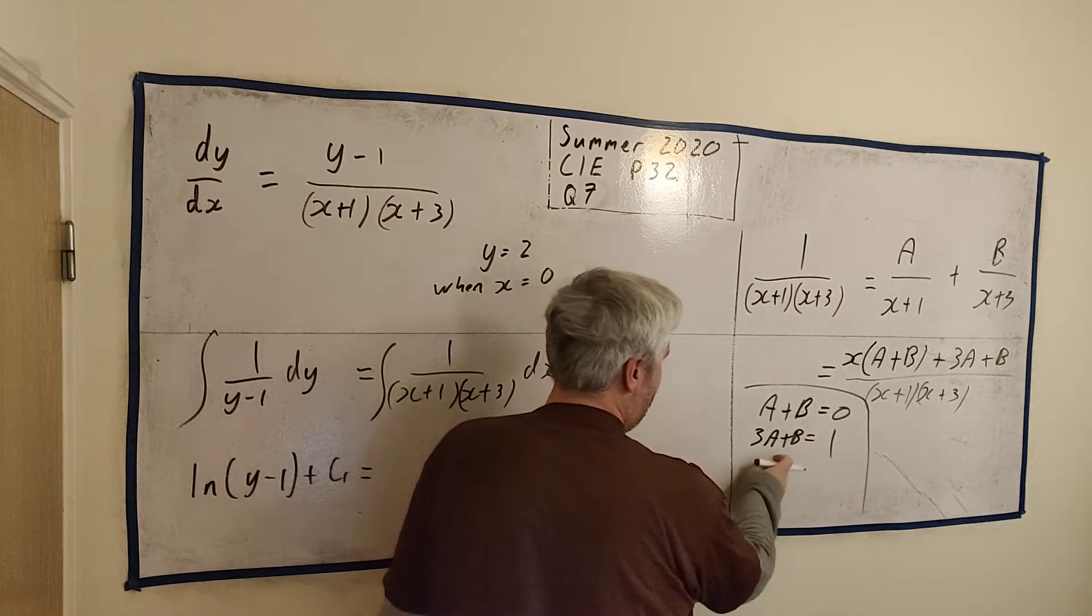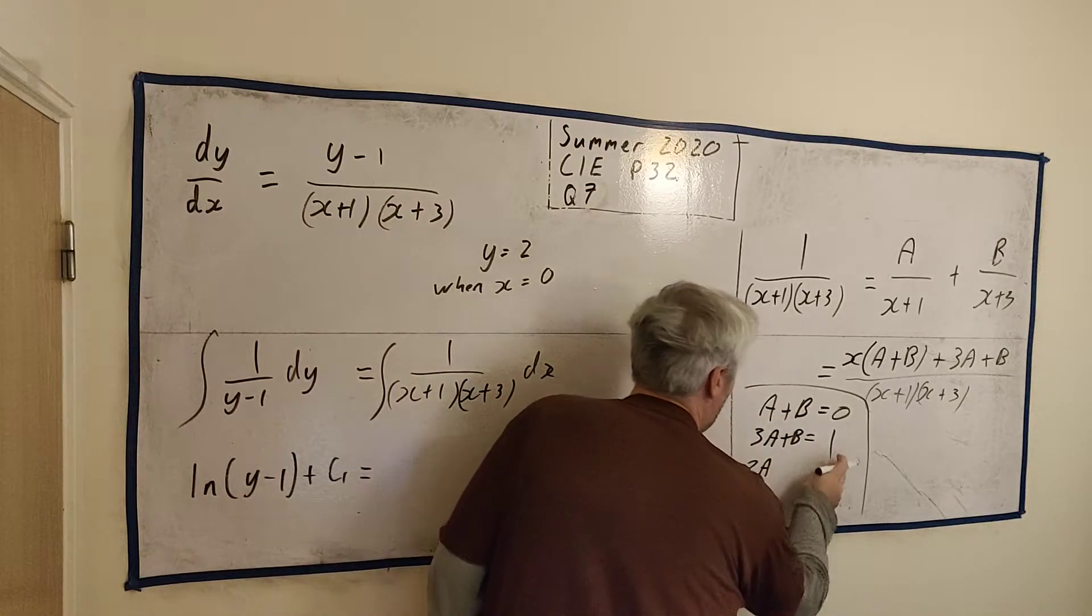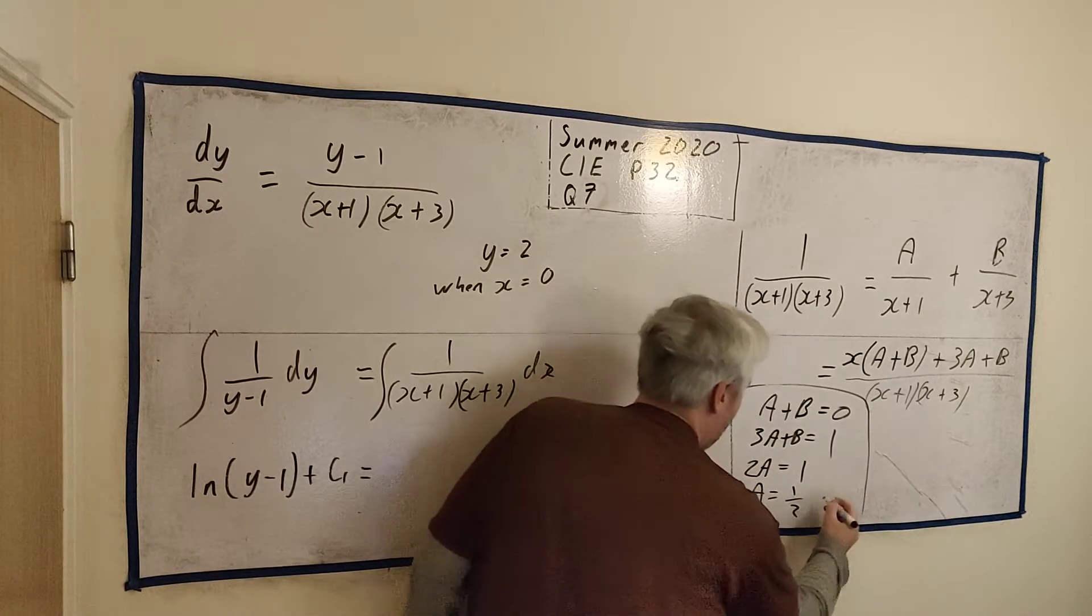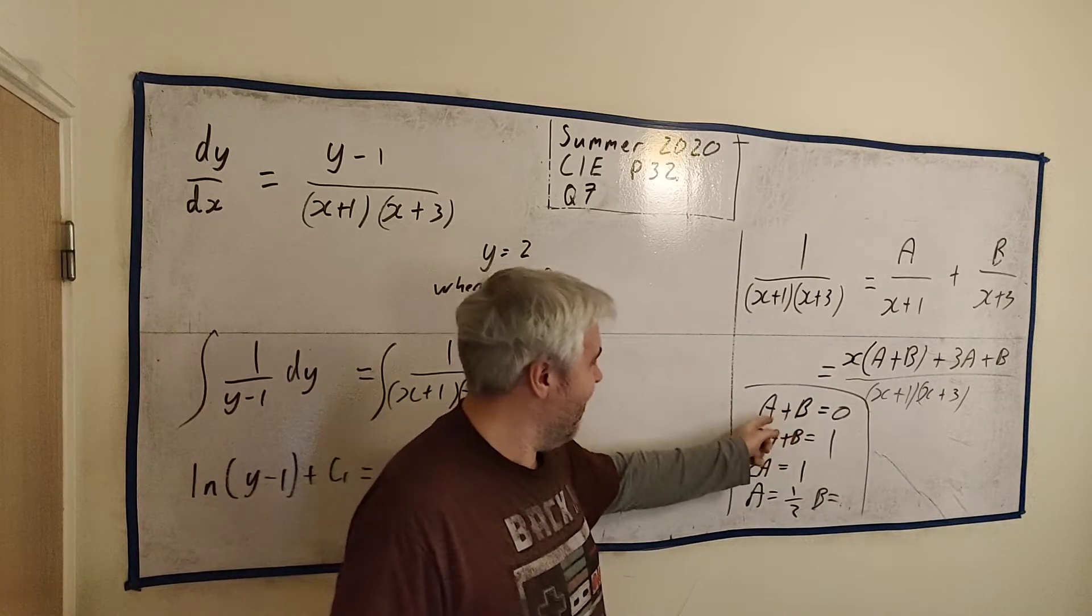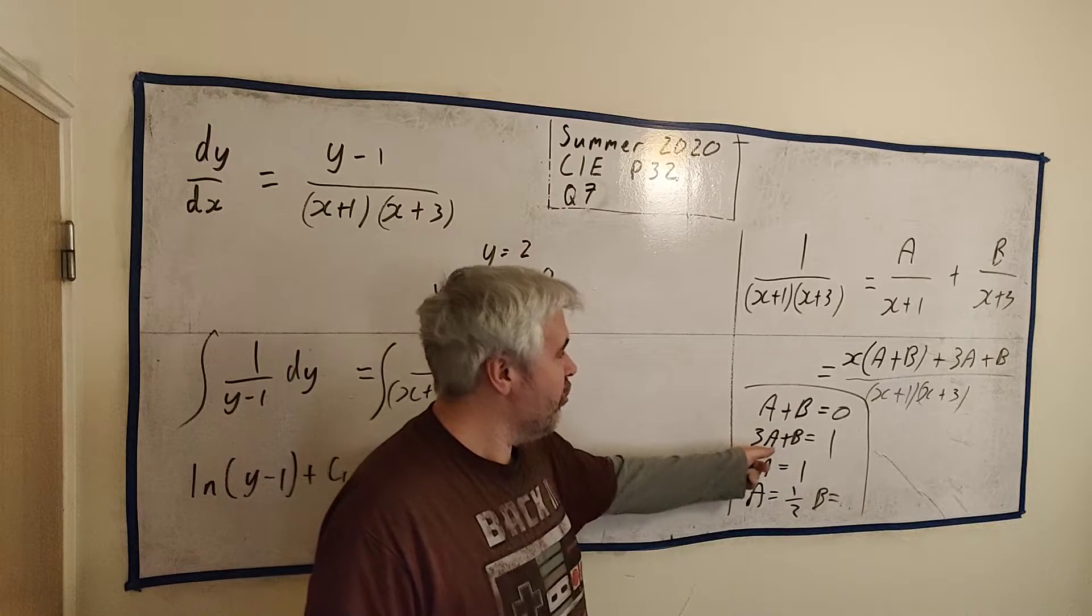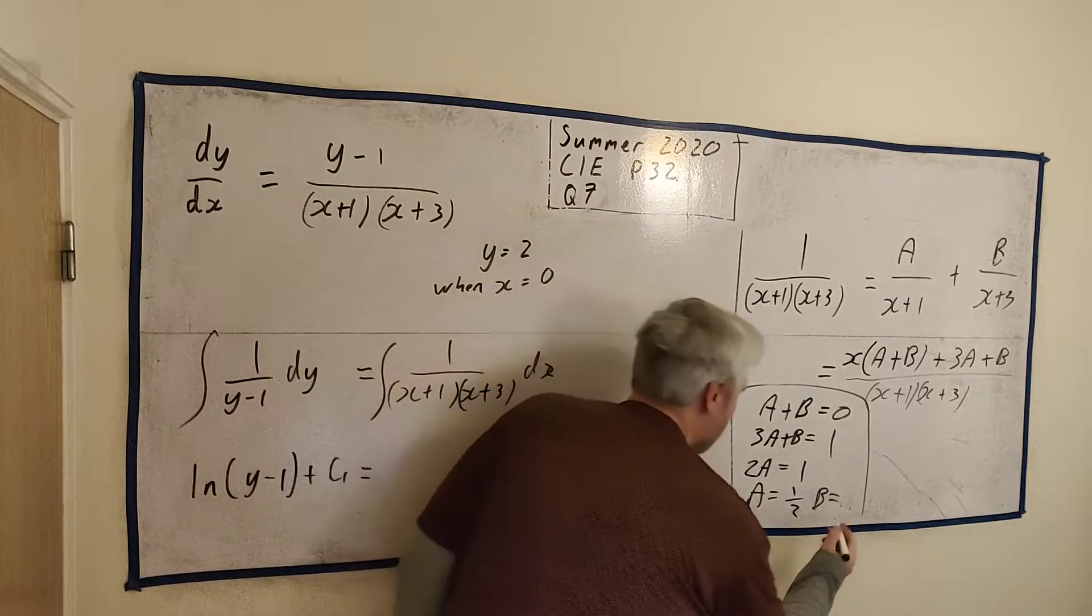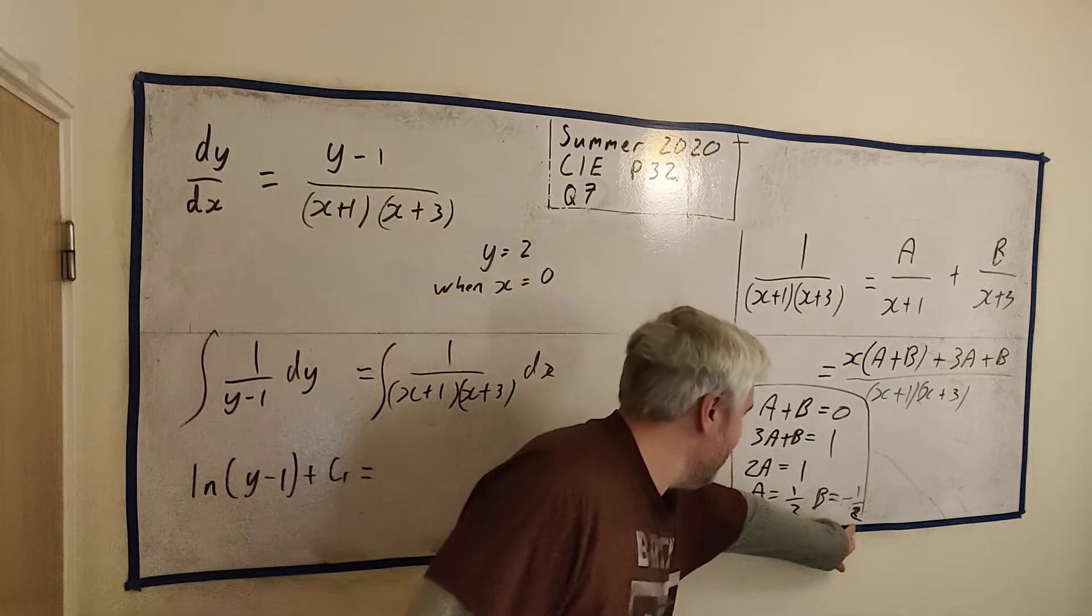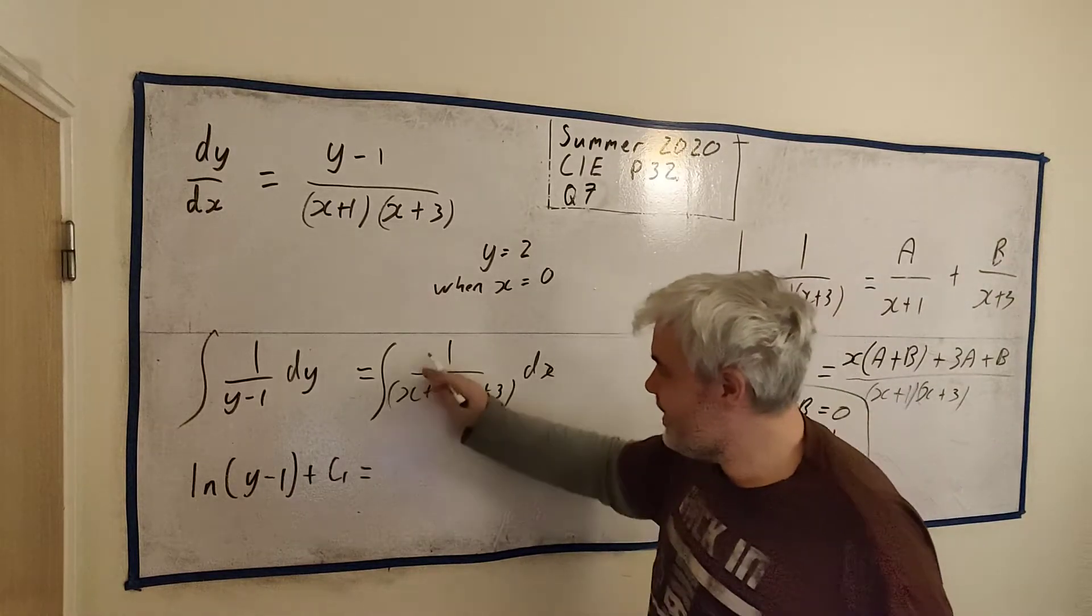We can do this in this little box here. Let's take the bottom one minus the top one. b minus b is 0. 3a minus a is 2a. 1 minus 0 is 1. So that's a is equal to a half. And therefore, if a is a half, b must be minus a half. A half plus minus a half equals 0. Let's double check it. 3 halves plus another minus a half is 2 halves, which is 1. So that's a minus 1 over 2. That means a is a half, b is minus a half.